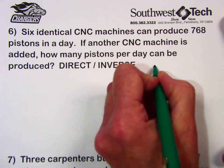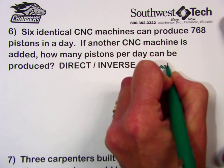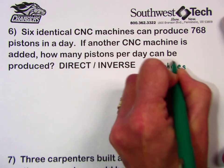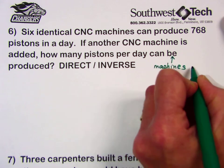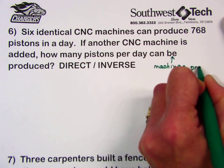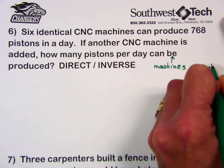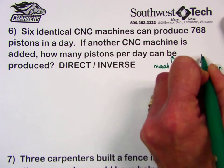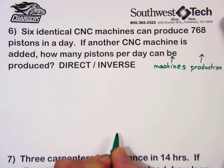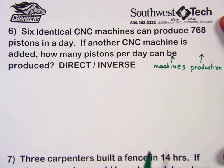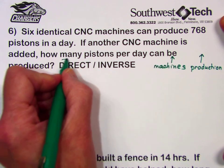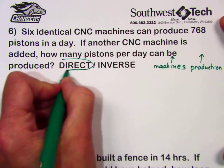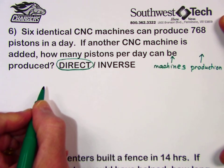Here we're talking about increasing the number of machines, and the result is what kind of production do we have. Common sense tells us if we have more machines, we're going to have greater production. Because both quantities are going in the same direction — both increasing — this is an example of a direct relationship.